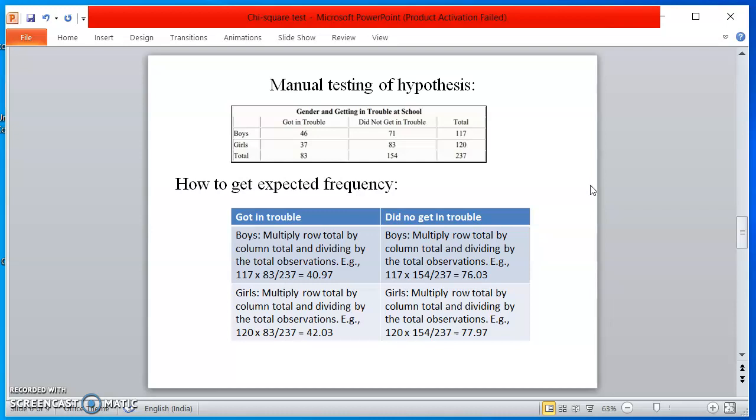Expected frequency for girls: multiply row total by column total and divide by the total observation. For example, 120 for girls, the total row score is 120 and got in trouble, total column score is 83. So you can see 120 into 83, then divided by 237. So 42.03.